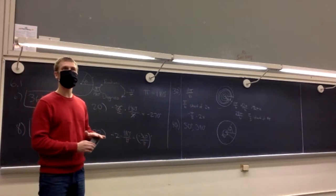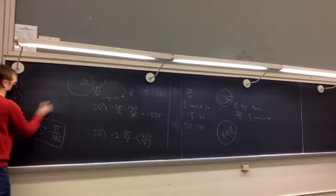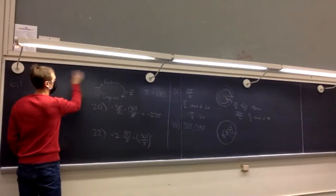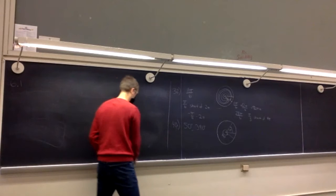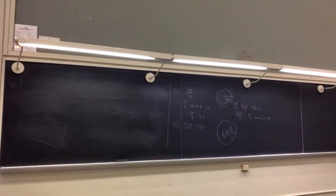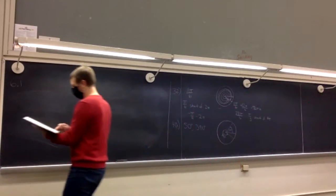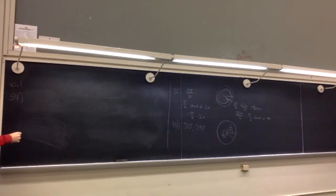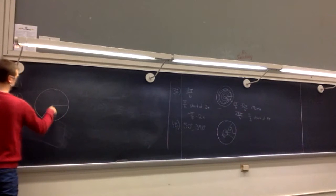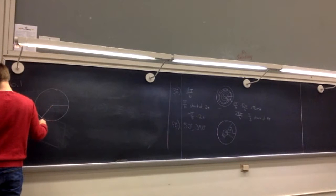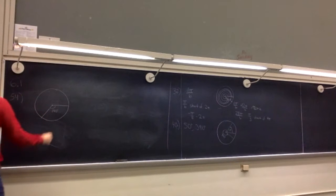Questions on these? Pretty simple, straightforward. Now question 54: find the length of the circular arc given radius R and a central angle. We're given a circle with a central angle of 140 degrees and radius 5. It's asking for this arc length S.